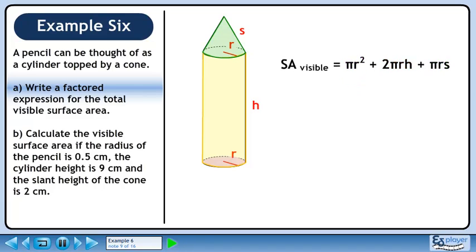The total visible surface area for the pencil is πr² plus 2πrh plus πrs. The greatest common factor is πr. The factored form is πr times r plus 2h plus s.